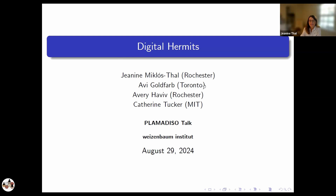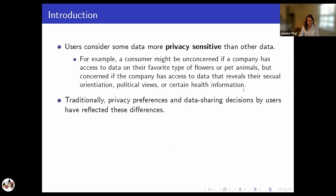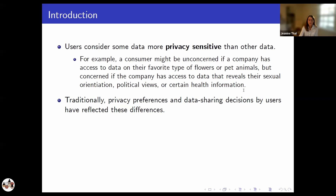When it comes to privacy, not all information about individuals is equal. Users consider some data to be more privacy sensitive than other data. For example, most of us would be unconcerned if a major tech platform had information to infer our favorite flower or favorite pet animal. But many of us might not want that same firm to know things like our sexual orientation, political views, or certain health information — data we consider to be privacy sensitive.